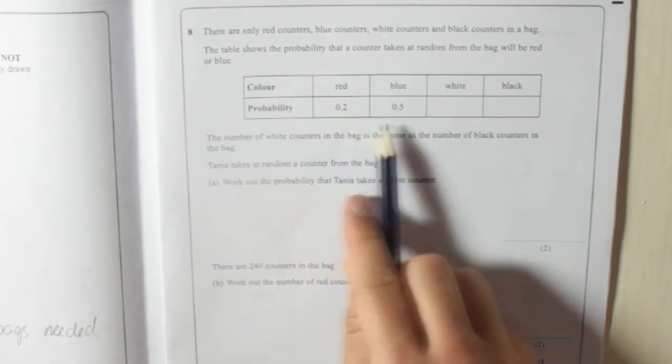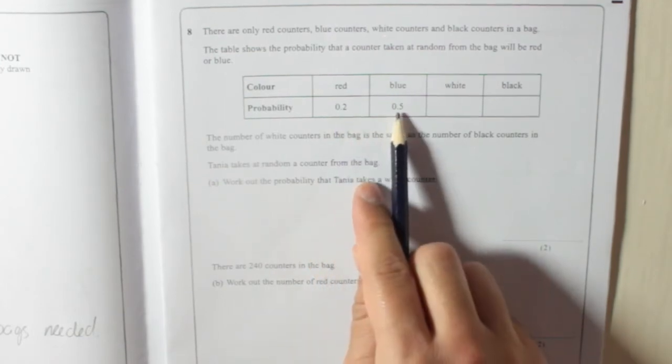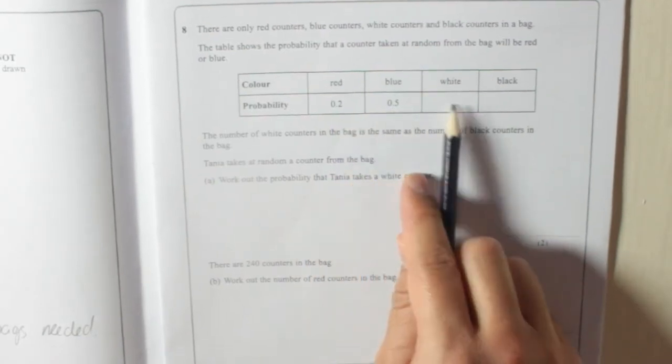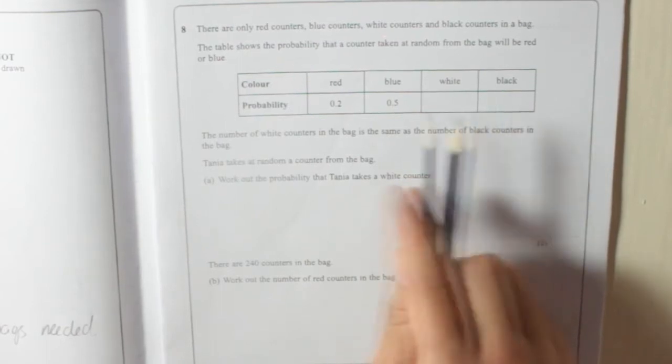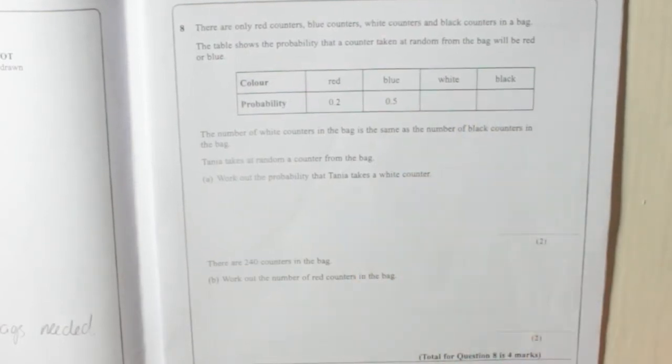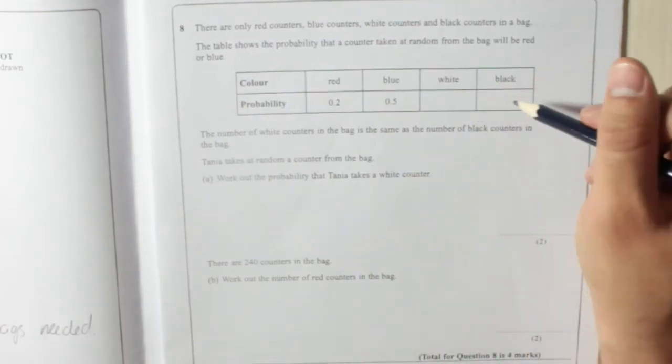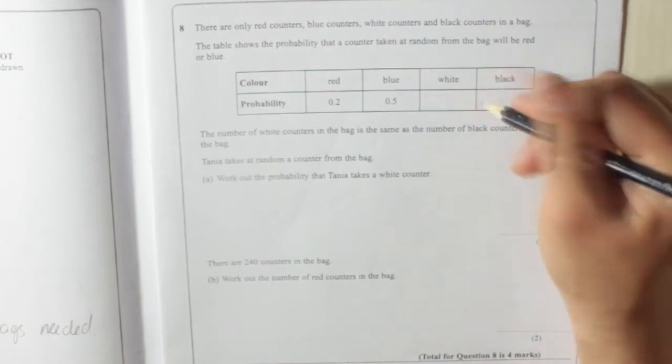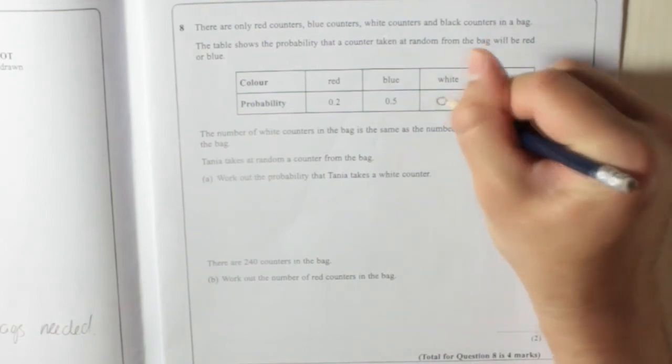So 0.2 plus 0.5 is 0.7. So what's left must add up to 1. So that's going to be 0.3. So because there's the same amount of white and black, you divide that by 2. 0.3 divided by 2 is 0.15.